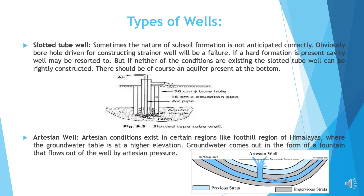Artesian well. Artesian conditions exist in certain regions like the foothill region of the Himalayas, where the groundwater table is at a high elevation. Groundwater comes down in the form of a fountain that flows out of the well by artesian pressure.